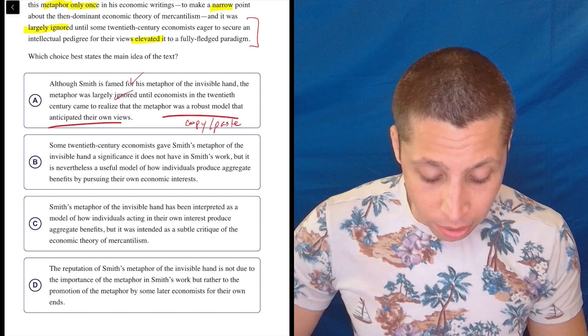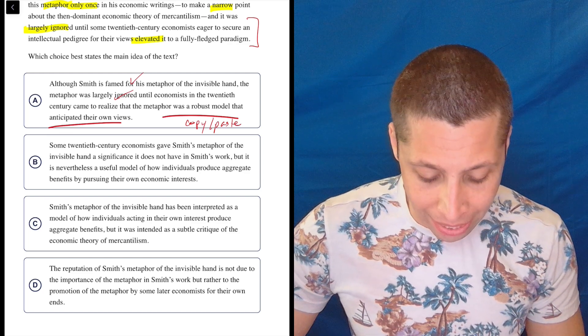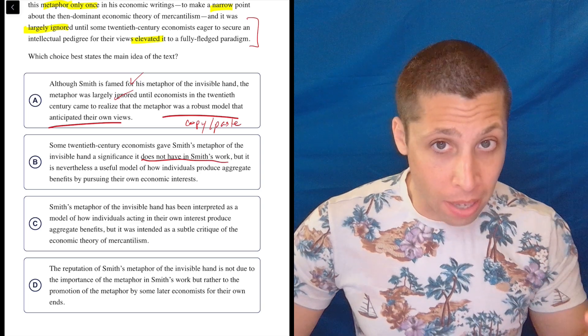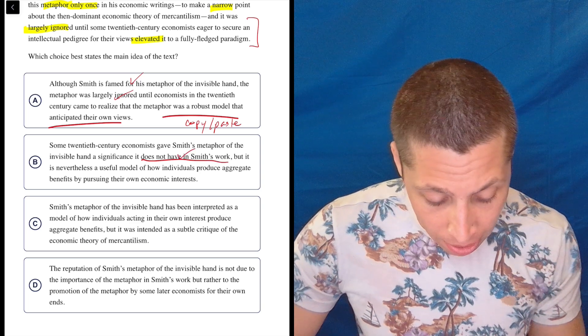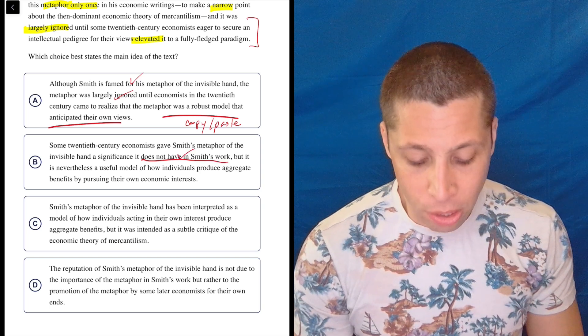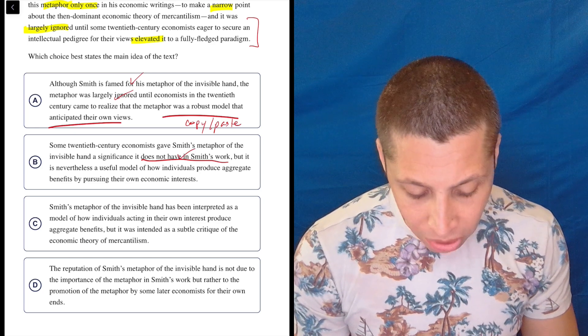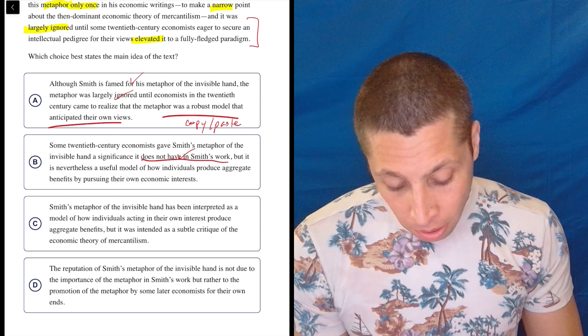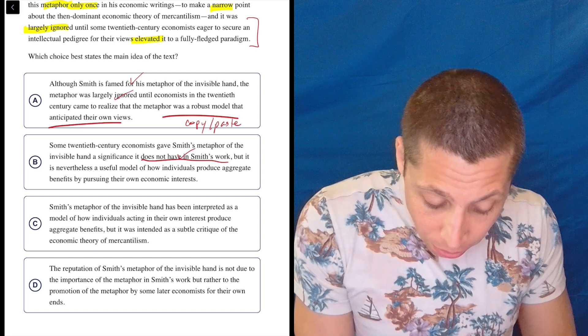So B, some 20th century economists gave Smith's metaphor of the invisible hand a significance it does not have in Smith's work. Well, it does say he only used it once, so it's not that significant. That seems okay. But it is nevertheless a useful model of how individuals produce aggregate benefits by pursuing their own economic interests. It does say similar things to that.